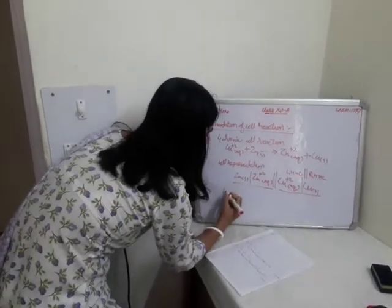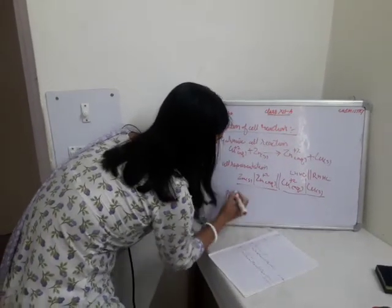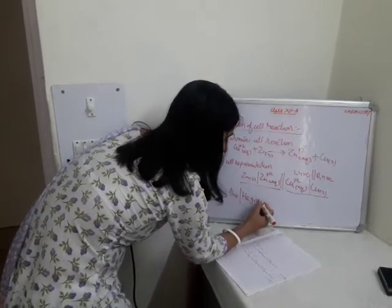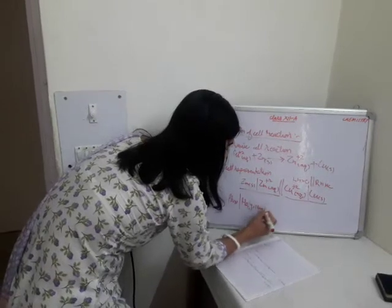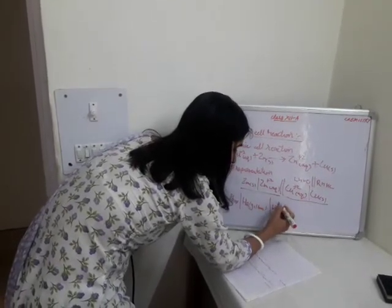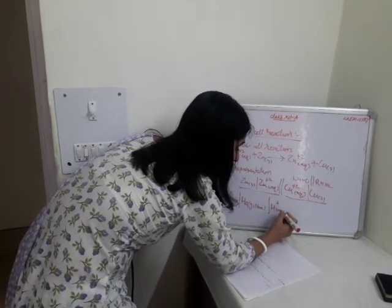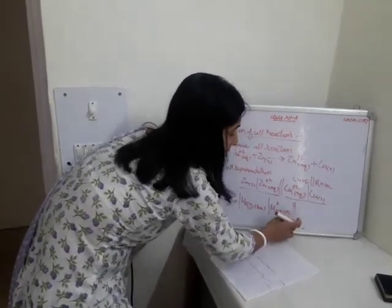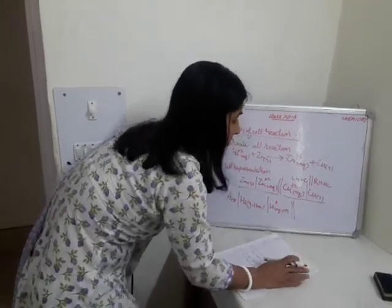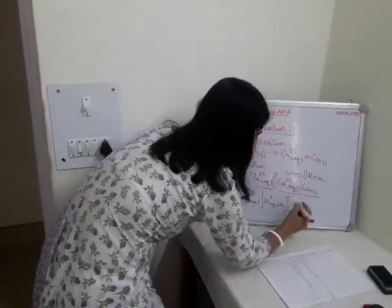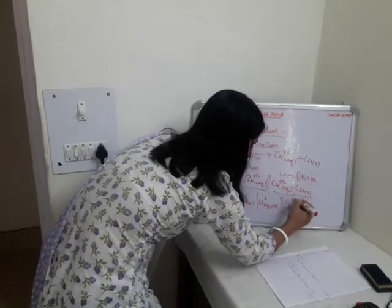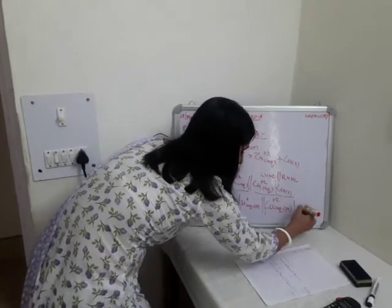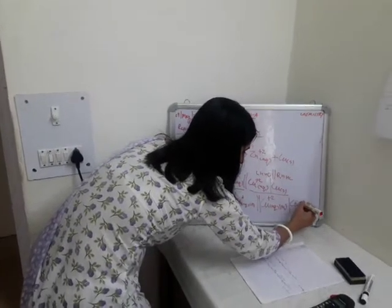The standard hydrogen electrode is represented by platinum solid. Solid hydrogen gas is maintained at one bar, along with hydrogen ion concentration in aqueous solution maintained at one molarity, followed by a double slash — which represents the salt bridge. Then copper aqueous at one molar concentration, single slash, copper solid.